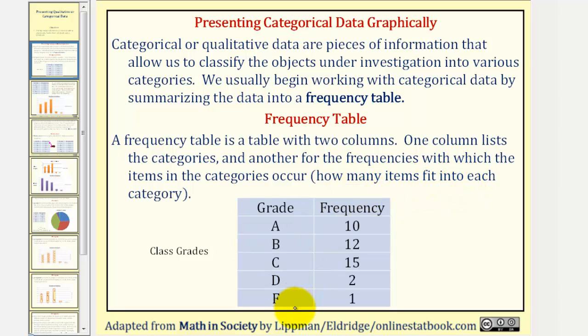Looking at the frequency table, we can tell that 10 students received an A, 12 students received a B, 15 students received a C, and so on. If we sum the frequencies, we can determine the population, which we can see here would be 40, so there were 40 students in the class.